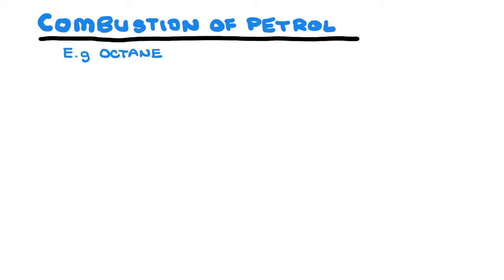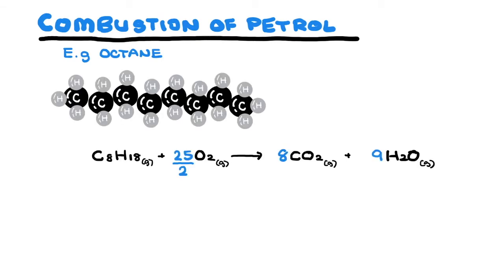Another example is petrol, which is a mixture of many hydrocarbons, but we can use octane as an example. As you can see, this hydrocarbon is massive, made up of eight carbons covalently bonded to 18 hydrogens. Coincidentally, far more bonds are being formed, which means more energy is released per mole of octane.